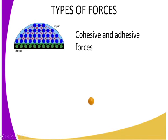There are different types of forces. First, we have cohesive and adhesive force. Cohesive force is the force of attraction between molecules of the same kind. In this diagram you can see water molecules which are attracted to one another, resulting in a cohesive force. At the same time, since the water is in contact with a solid surface such as a bench, there exists adhesive force — the force of attraction between molecules or particles of different kinds.